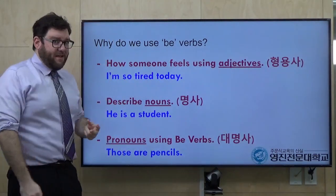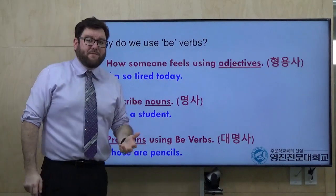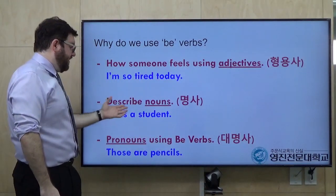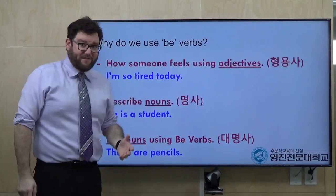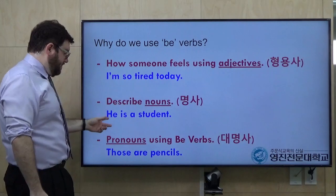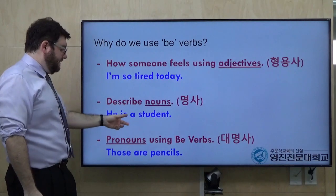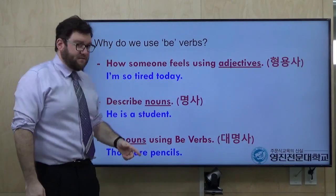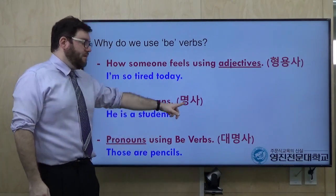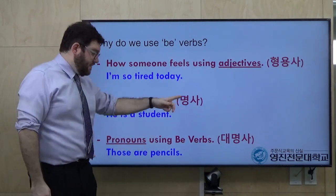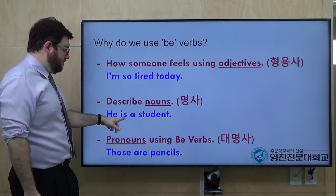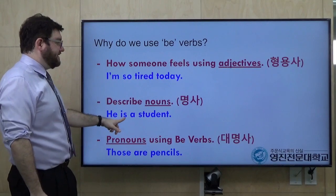두 번째: we use B-verbs to describe nouns. For example, 'he is a student' — student is the 명사, and here is the B-verb, B-동사.